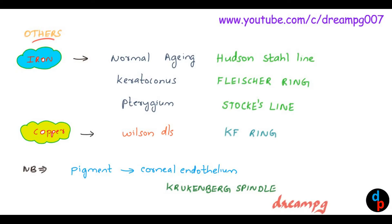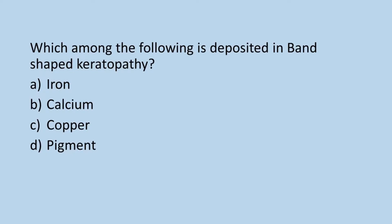Thank you very much. Please answer this question: which among the following is deposited in band shaped keratopathy? Option A: iron. Option B: calcium. Option C: copper. Option D: pigments.